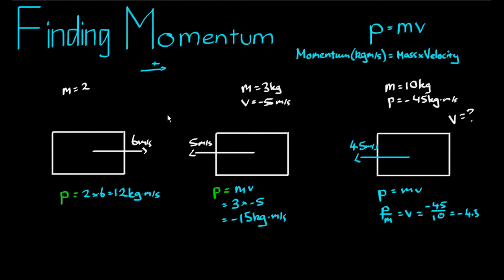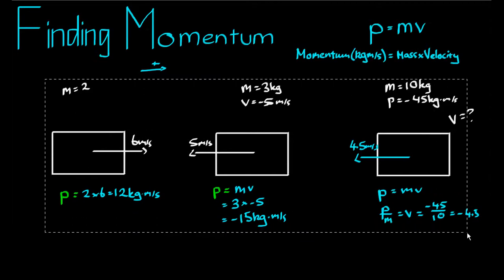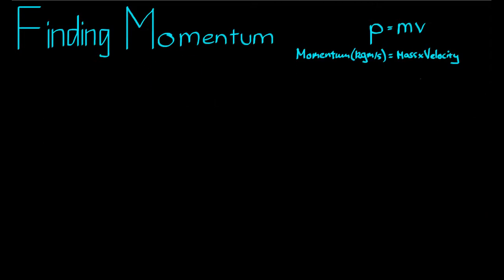Hopefully, having seen those three examples, you'd be able to find — given any two of mass, velocity, and momentum — the third one. Let's now look at change in momentum, which becomes very important later in the course. Change in momentum, delta p, is equal to the final momentum pf, take away the initial momentum pi. That's our first formula for it.